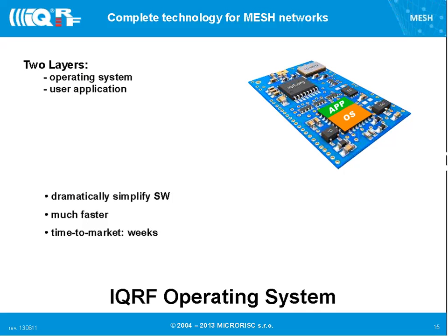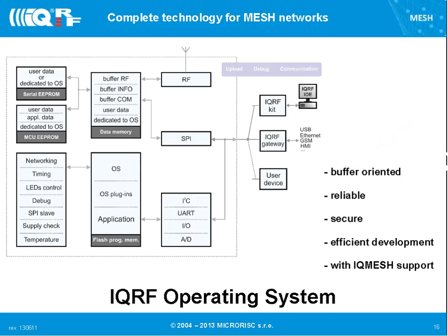The whole concept of IQRF is a two-layer system: the operating system and your application on top of it. Every module you order comes with the operating system pre-loaded; you then write your application using the OS instructions and functions. This focus on fast and easy development means you only use functions — you don't write the whole program from scratch. Time to market depends on complexity but is usually a matter of weeks or a couple of months, definitely not half a year.